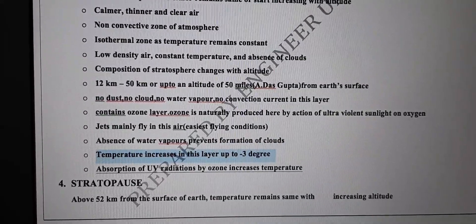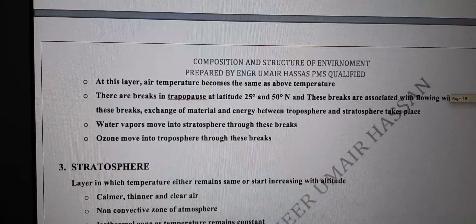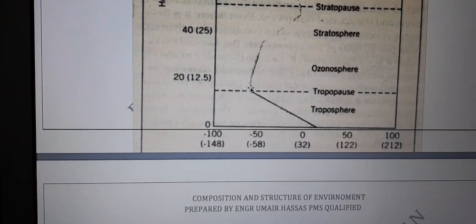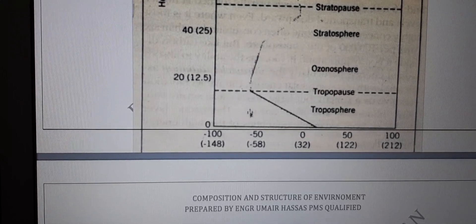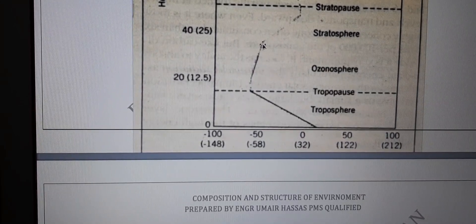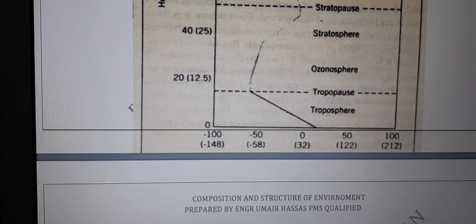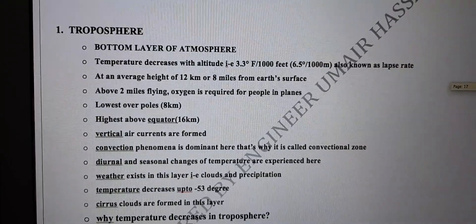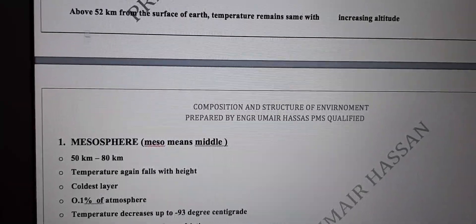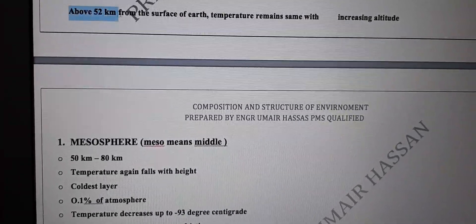Temperature in the stratosphere increases up to minus 3 degrees centigrade. Starting from minus 53 degrees at the tropopause, temperature increases up to minus 3 degrees. The reason for this increase is that ozone absorbs ultraviolet radiations.